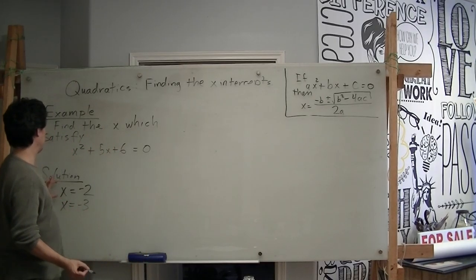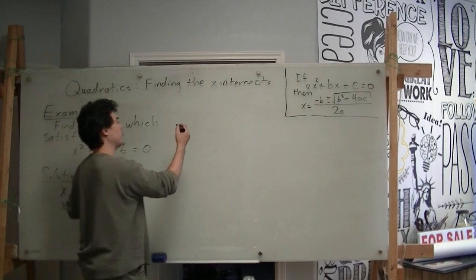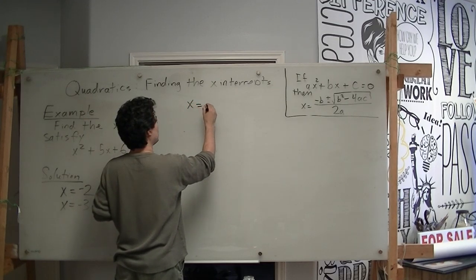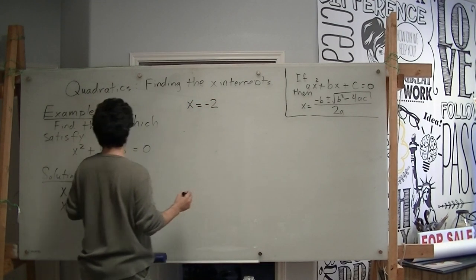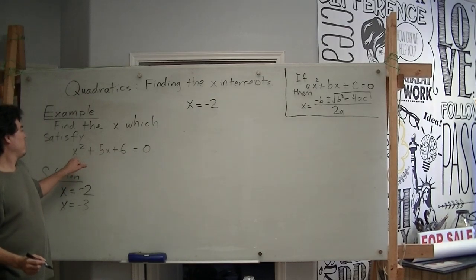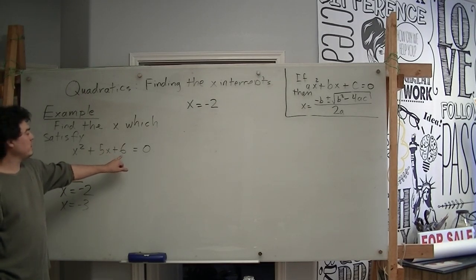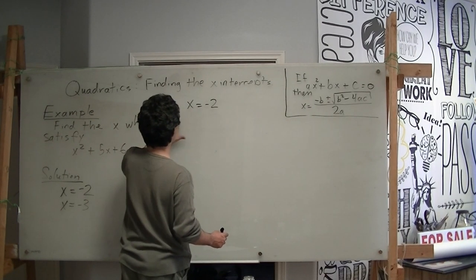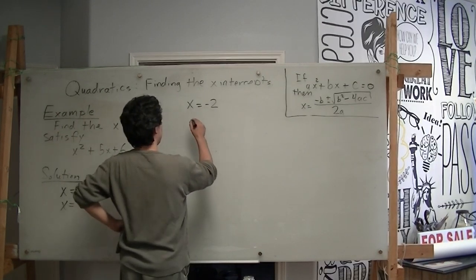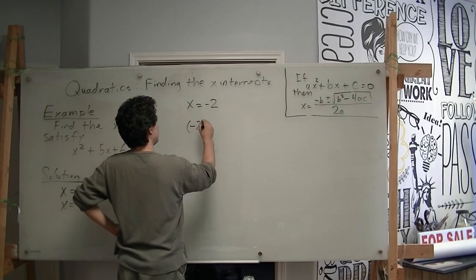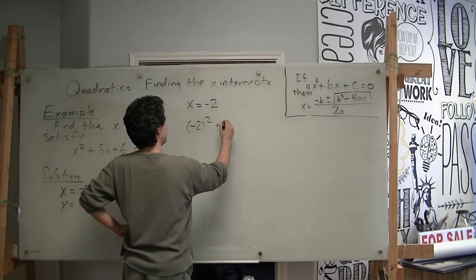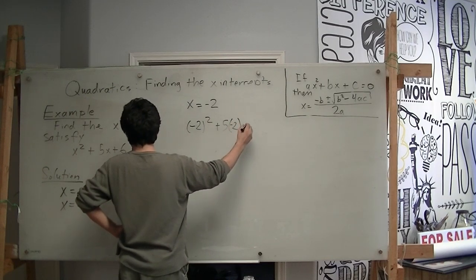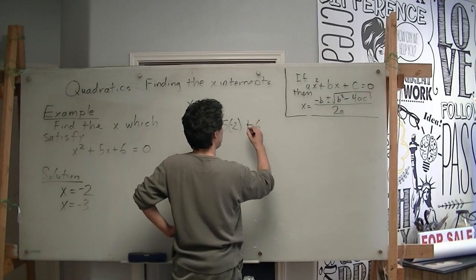So I'm going to start by testing x equals negative 2 first. I'm going to plug it into my equation here. It'll be negative 2 squared plus 5 times negative 2 plus 6 equals 0. I want to see if that's true. So I'm going to use the left-hand side and I'm going to figure it out. Negative 2 squared plus 5 times negative 2 plus 6. What is this equal to?